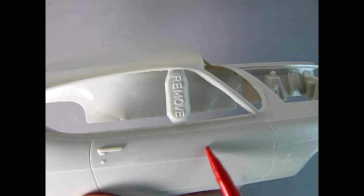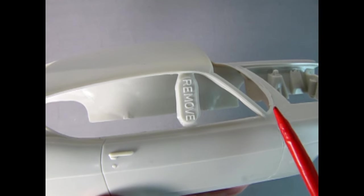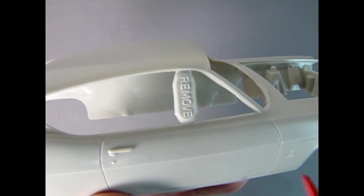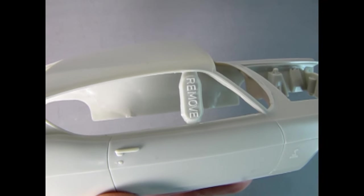In the side window openings, we have these thick portions that were put in place to prevent the front window pillars from warping in the mold process. We need to remove these and file the attachment points flat to make the kit look like the real car.